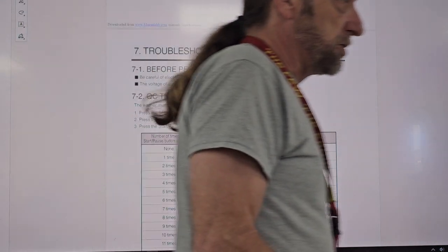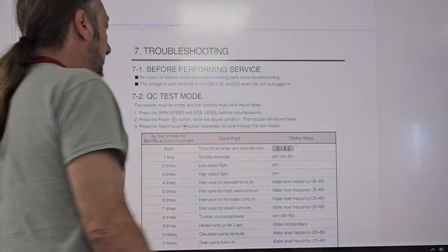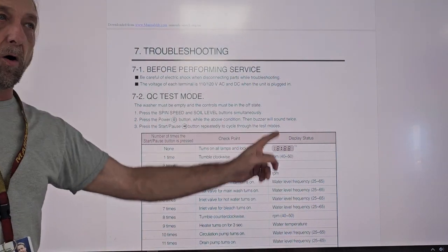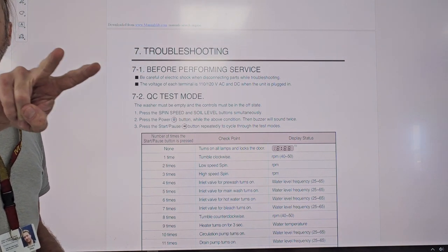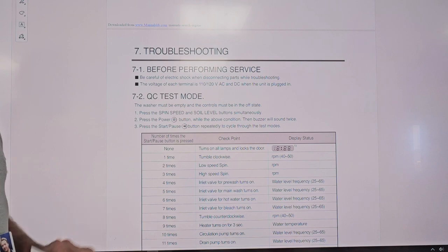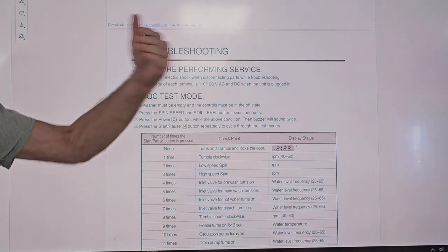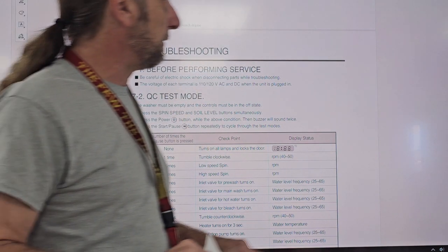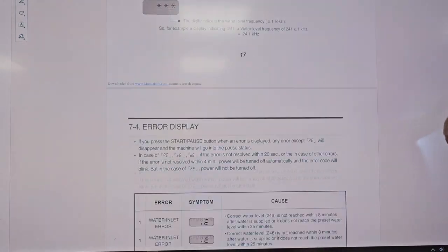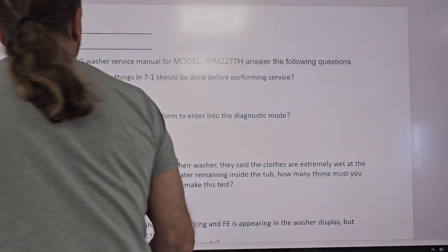Now the second question, is what steps must you perform to enter diagnostics? Almost all LGs, you press the spin speed and soil level button, hold them down, and press power. When you do so, everything should light up. And then you press the start pause button to advance to each step as you're testing. And these are all the steps down here. So that was the first two. Let's go here. What does number three say?